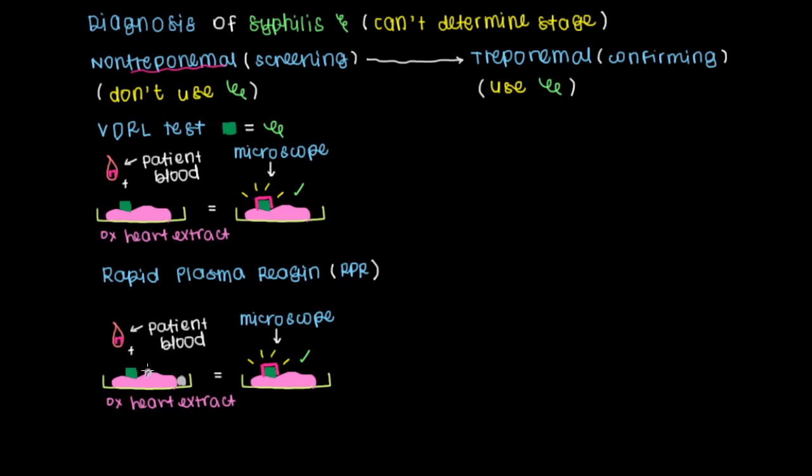These carbon particles help us if there's a reaction present here to see the binding of the antibody with the protein, not with a microscope, but with our eyes. As you might imagine, the rapid plasma reagent test tends to be faster than the VDRL test.